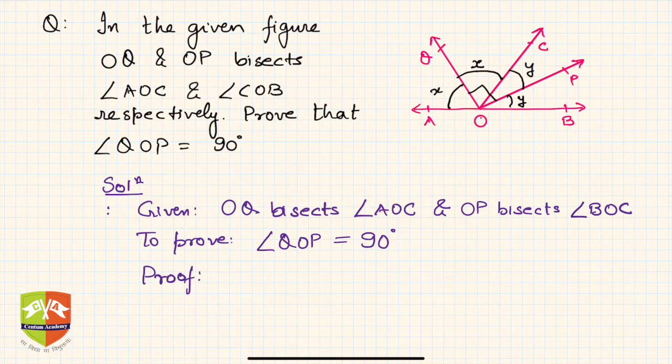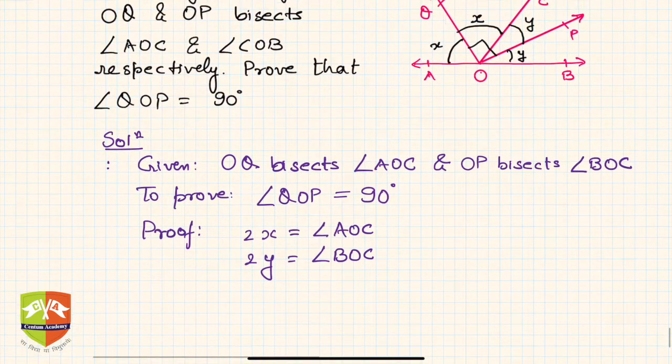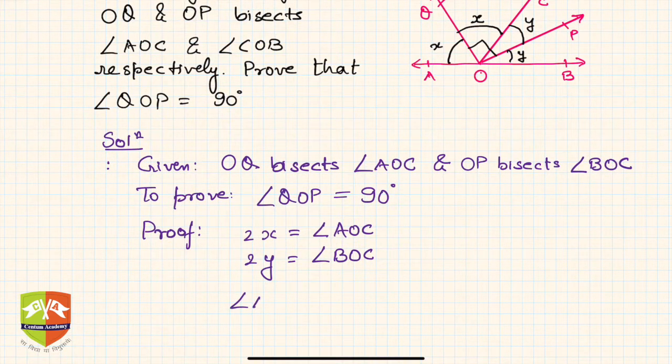We use the given information - since OQ bisects angle AOC, we can label the angles as x and x. So 2x equals angle AOC, and similarly, 2y equals angle BOC.